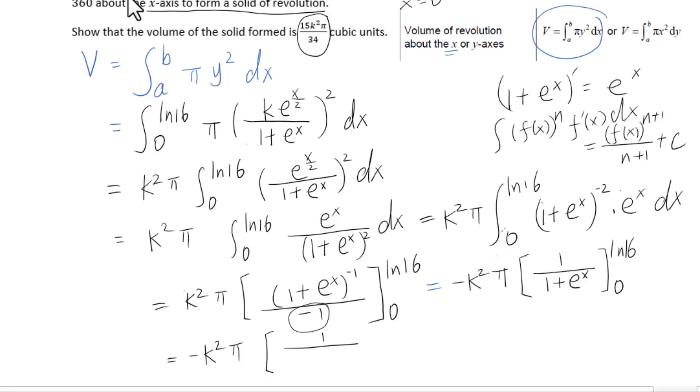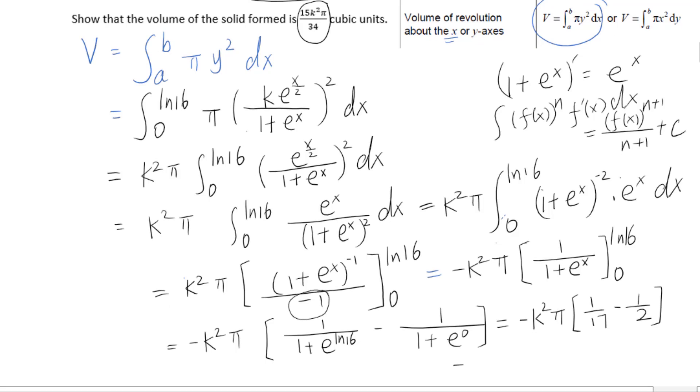Negative k squared pi times, 1 over 1 plus e to the natural log of 16, minus 1 over 1 plus e to the 0 power. This is 16, so 1 plus 16 is 17, giving us 1 over 17 minus 1 over 2.